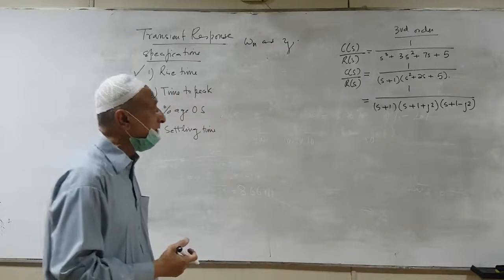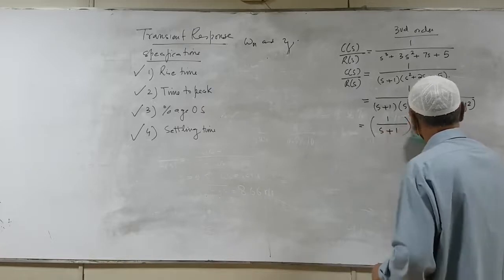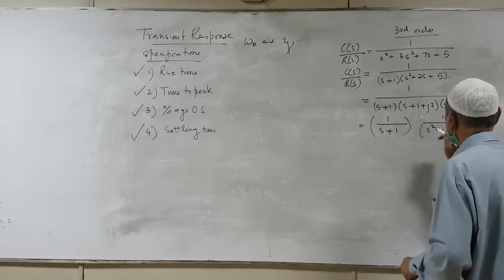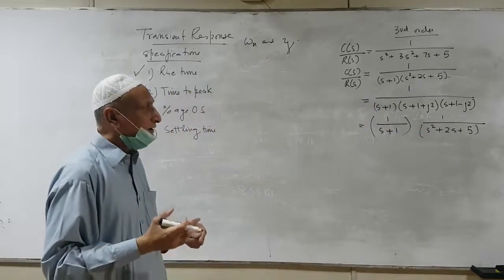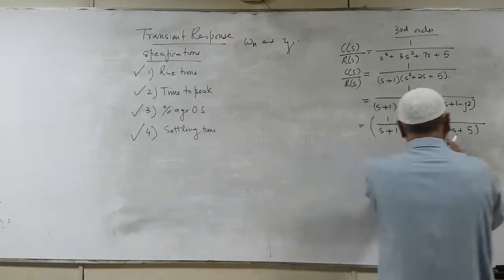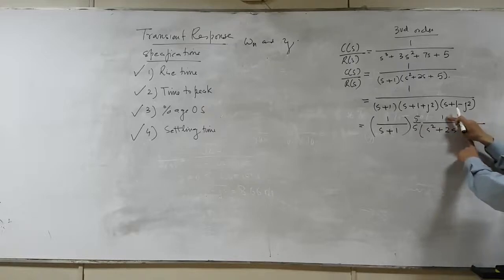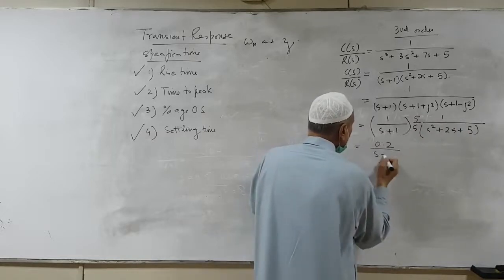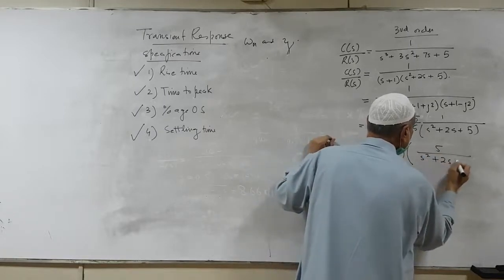Two poles are in the form of complex conjugates, so the system can be viewed as a cascaded system. We have a first-order system and then a second-order system. However, this expression is not a standard second-order system. To make it standard, we multiply and divide by 5, because this quantity must appear in the numerator as well. So this becomes 0.2 divided by (s plus 1), cascaded with 5 divided by (s squared plus 2s plus 5).